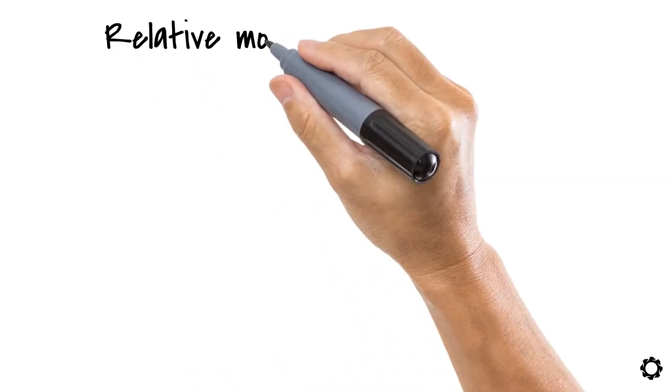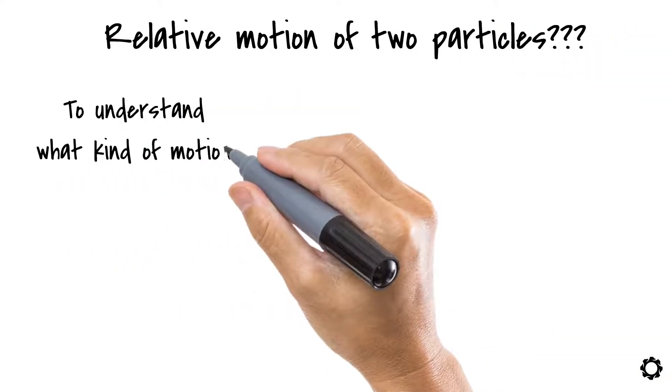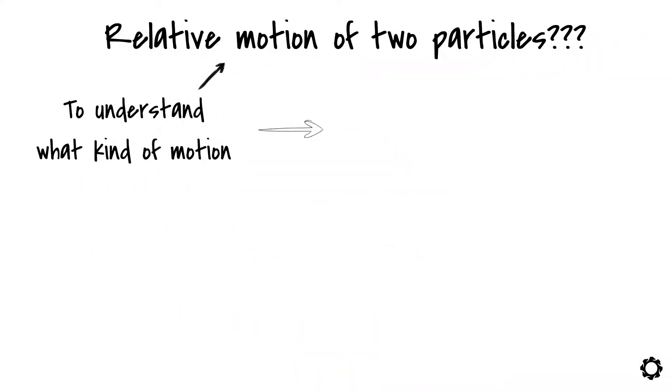So what is meant by the relative motion of two particles? To understand what kind of motion the relative motion is, we first have to understand what is meant by the absolute motion of a particle.